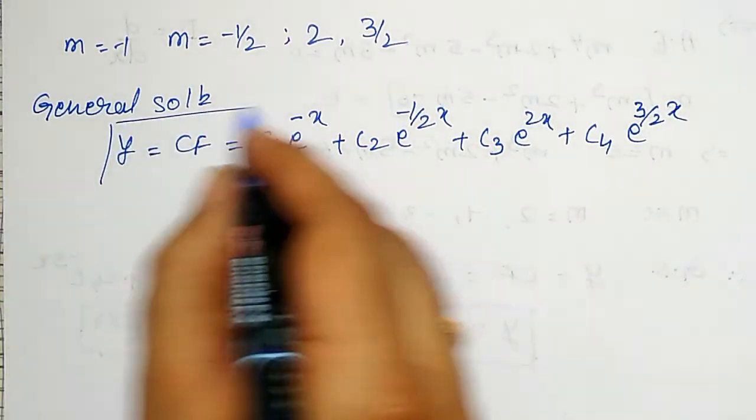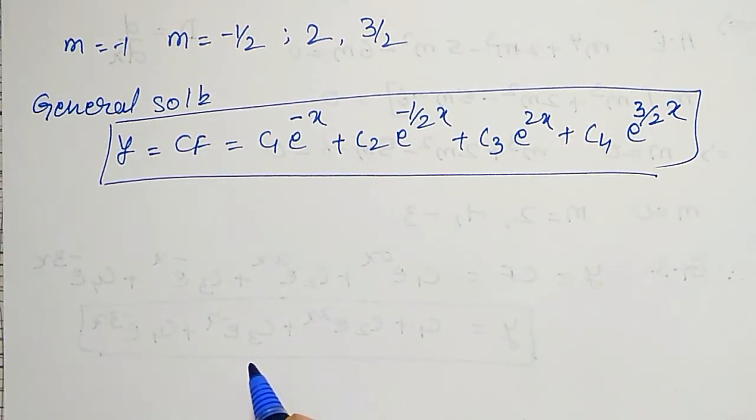This is what I can write the CF or general solution for the biquadratic equation. As the right hand side is 0, the CF itself will become the general solution of this one.